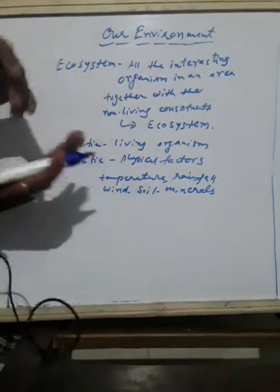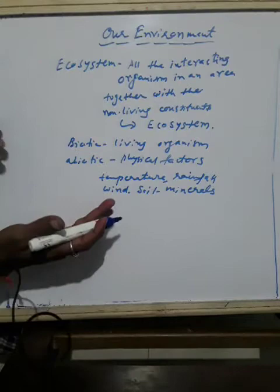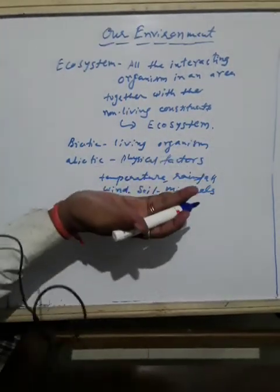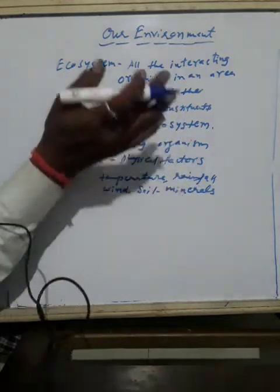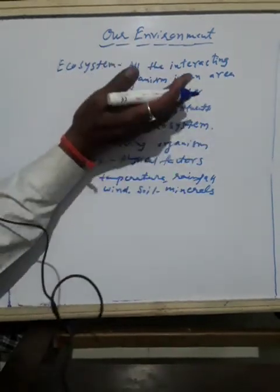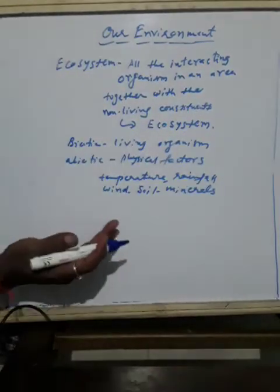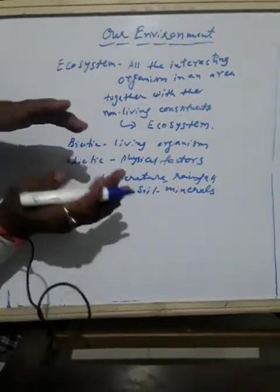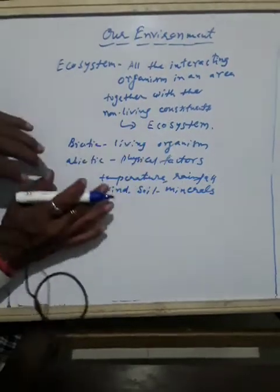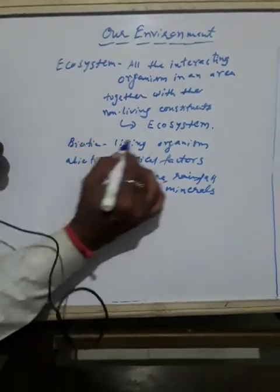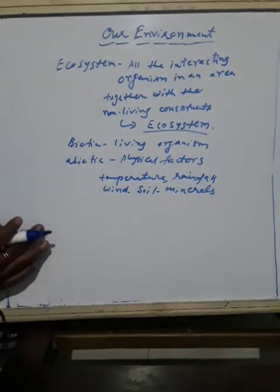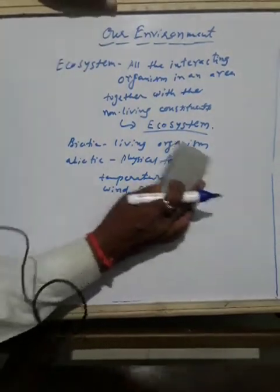The interaction between abiotic and biotic components — abiotic includes all the living organisms, whether human beings, plants, animals, or microbes — and their interaction with physical factors like temperature and rainfall will have an impact on the living organisms. Both are interrelated with each other, and that interaction between them constitutes what is called an ecosystem.